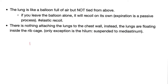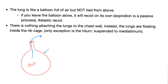A simple analogy: inflate a balloon but don't tie the top — the air escapes and it deflates. The lung is like that balloon with air but not tied. Left alone, the lung recoils due to elastic recoil, because lung contains elastin — an elastic protein. If the lung had its way, it would recoil.